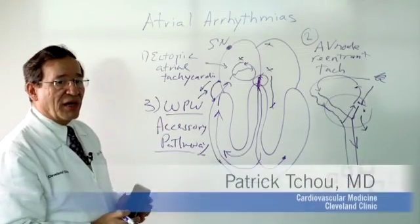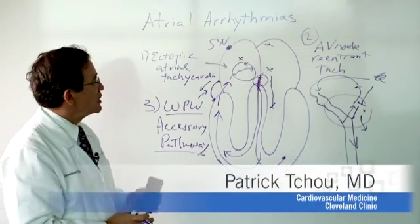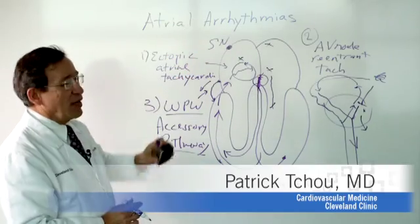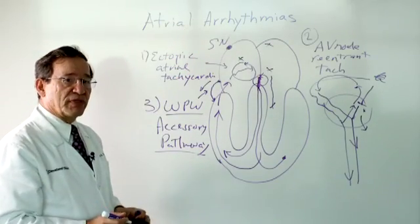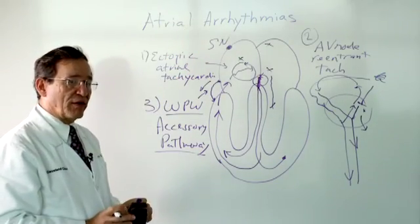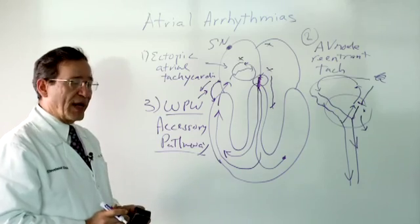These three types of arrhythmias involving the upper chamber are the most common types of arrhythmia. They make up just about 100% of all the different types of arrhythmias.